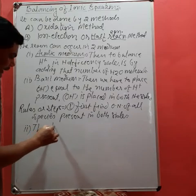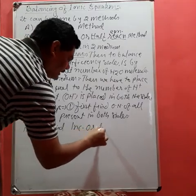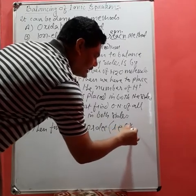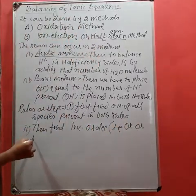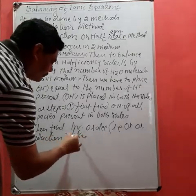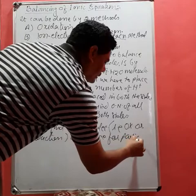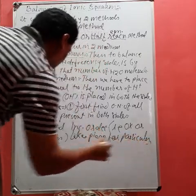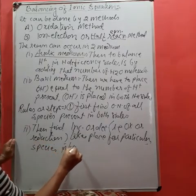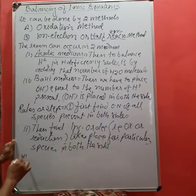The second rule is to find the increase or decrease - that is, oxidation or reduction - that takes place for particular species on both sides.